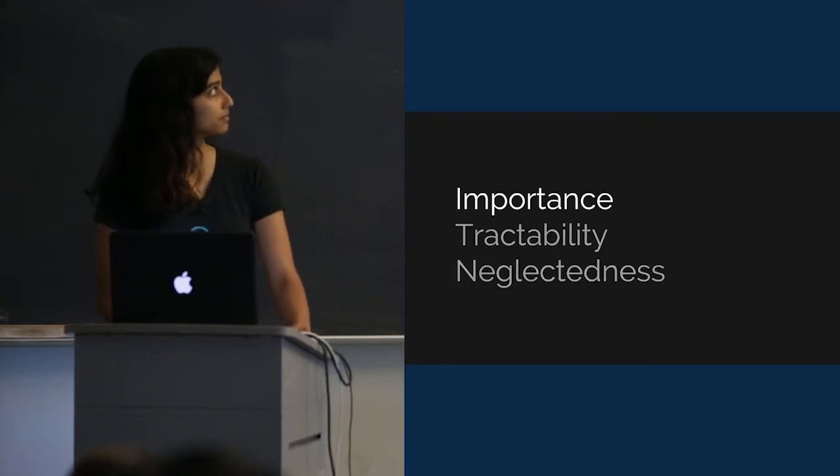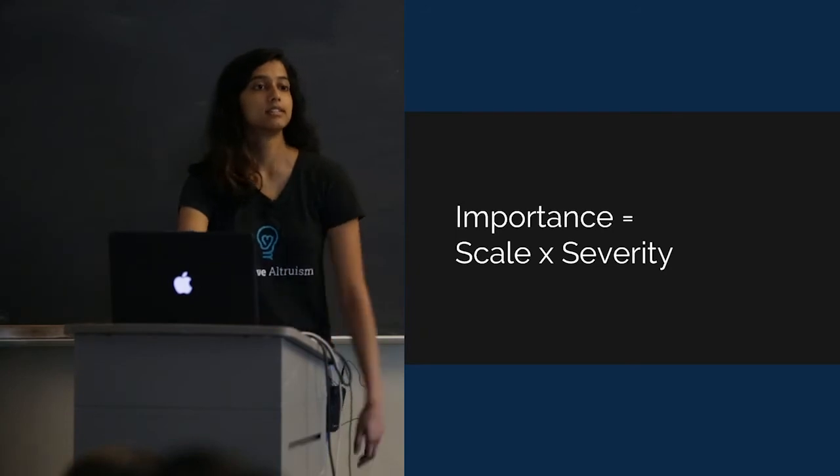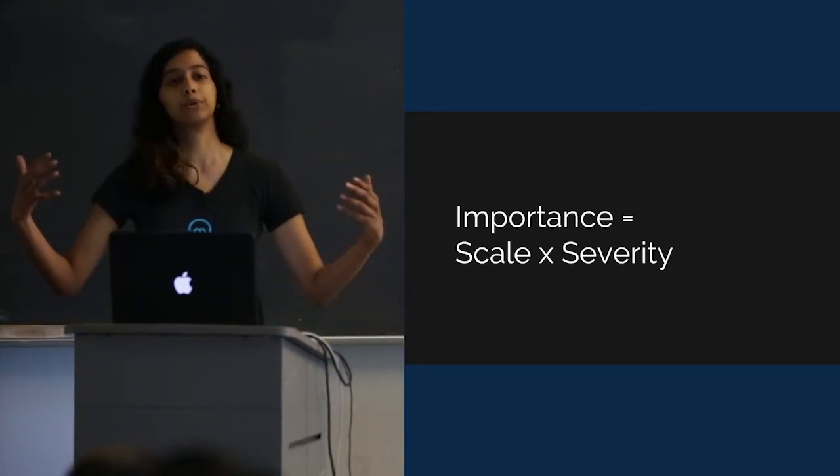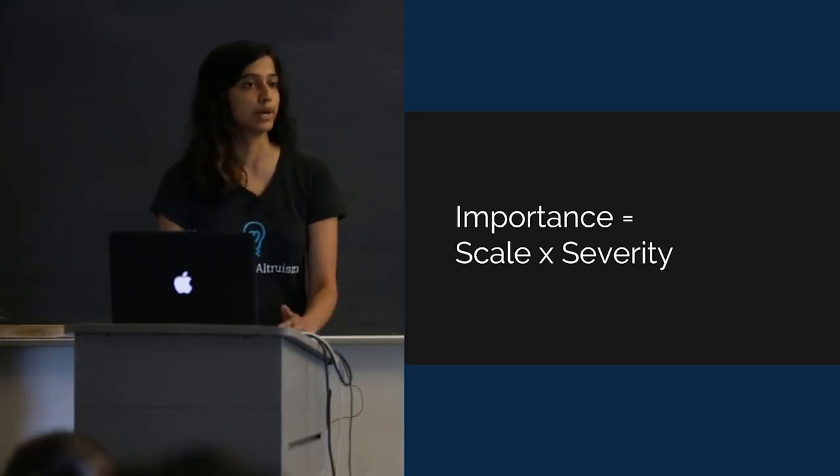Let's start with importance. Importance is the product of scale and severity. Scale refers to the number of people or animals this problem affects, and severity refers to how badly it affects each one.